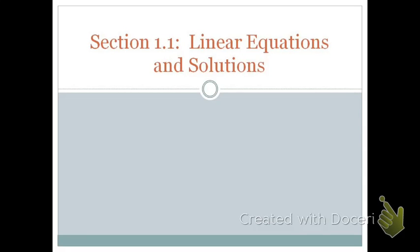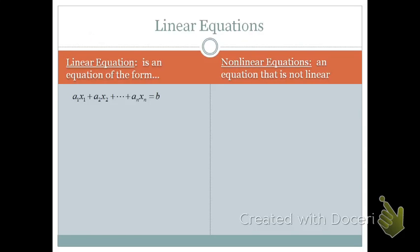Section 1.1 Linear Equations and Solutions. A linear equation is an equation in the form of a1x1 plus a2x2 plus dot dot dot anxn is equal to b.